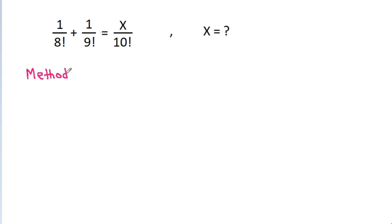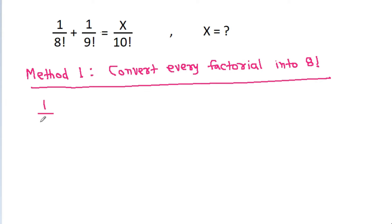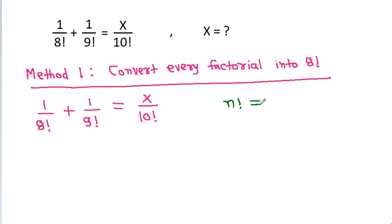Method 1: if we convert every factorial into 8 factorial. We have 1 by 8 factorial plus 1 by 9 factorial is equal to x by 10 factorial. And n factorial is equal to n times n minus 1 factorial, if n is greater than or equal to 1.